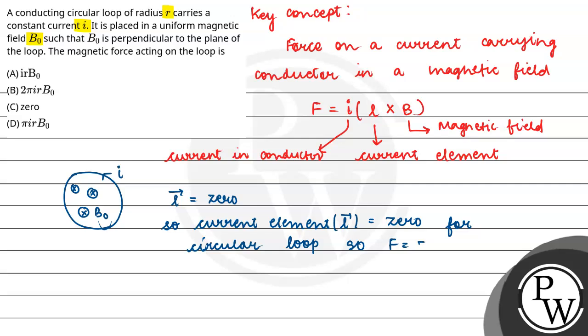So force, what will happen? The force acting on the loop will be also equal to zero. So our option number C is correct.